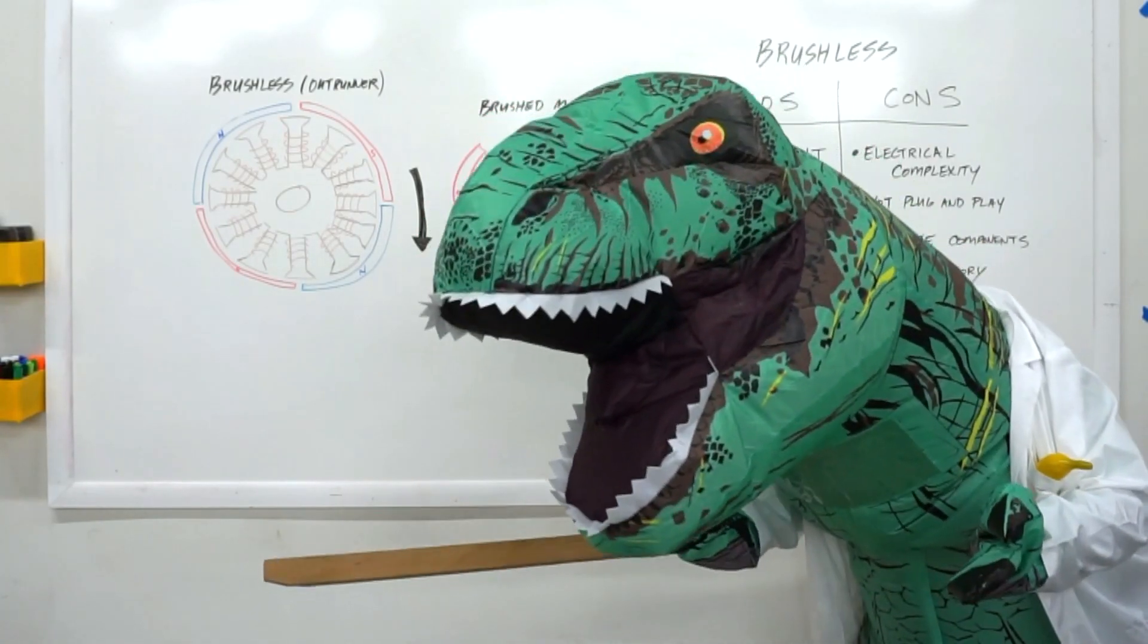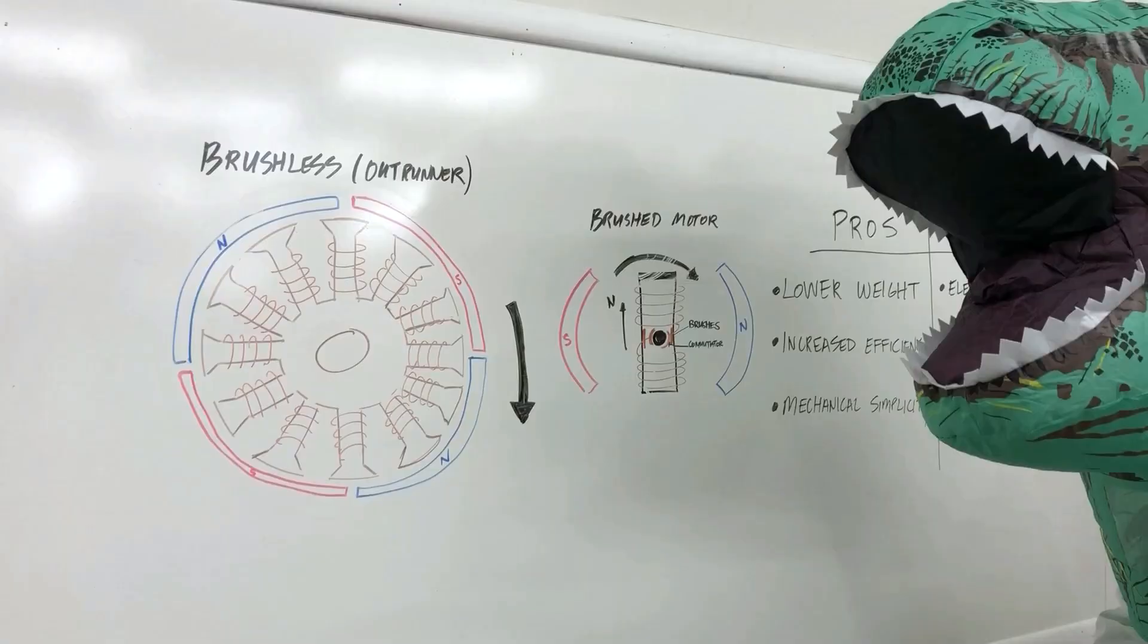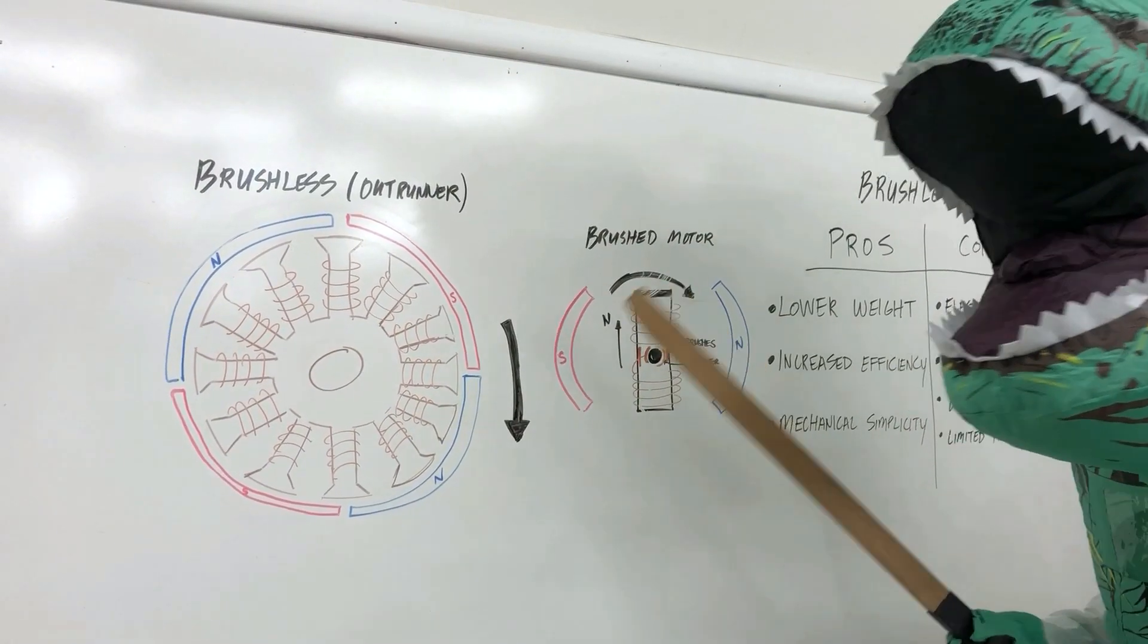When it comes to BattleBots, electric motors come in two variants: brushed motors and brushless motors.